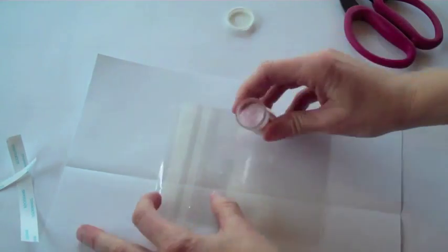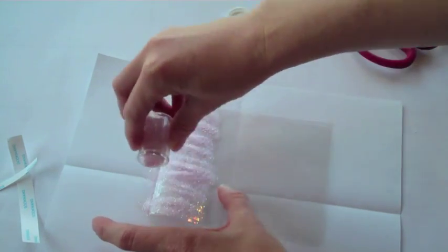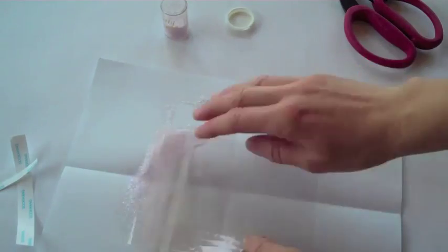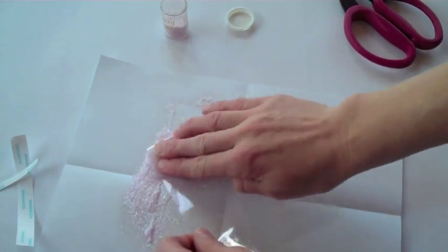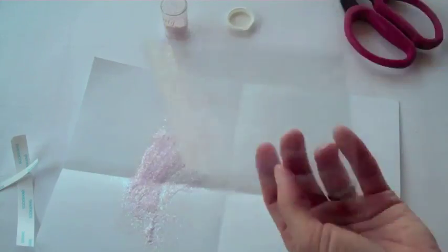Once you remove the backer, it's time for glitter. The nice thing about this technique is that once you've put your glitter down, go ahead and press it in so you get a really nice hold on the front of your card. Looking good so far.